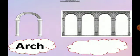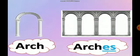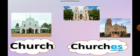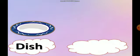One arch — it's ending in CH. Many arches. One church — church ends in CH. To make it many, I have added ES. Many churches. Church becomes churches.